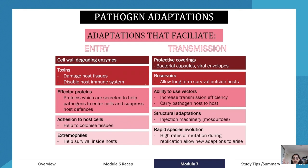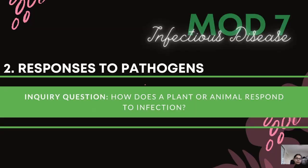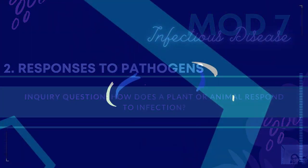We saw this with the COVID-19 pandemic, where we went from the original coronavirus through alpha, beta, gamma, and eventually to the Omicron variant — the whole process of rapid replication produced variants that became more transmissible over time.